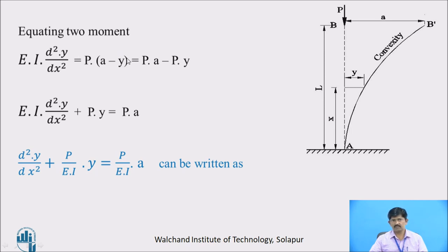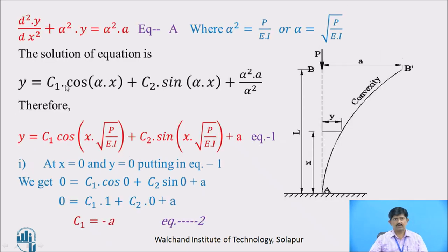Multiplying out the bracket gives P times A minus P times Y. Taking the negative term to the left-hand side, we get EI d²y/dx² plus (P/EI) times Y equals P/EI times A. This equation can be written as d²y/dx² plus α²y equals α²A, where α² equals P upon EI, therefore α equals the square root of P by EI. The solution of this equation is Y equals C1 cos(αx) plus C2 sin(αx) plus α²A upon α², which simplifies to C1 cos(αx) plus C2 sin(αx) plus A.